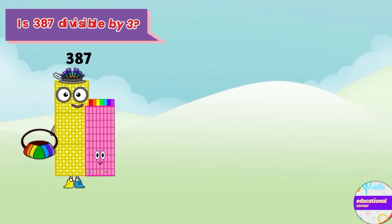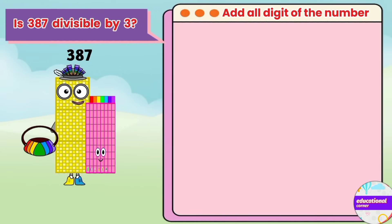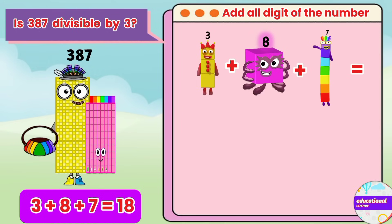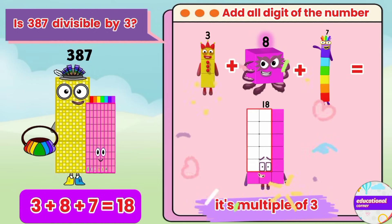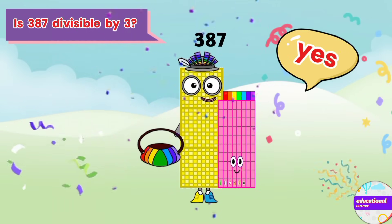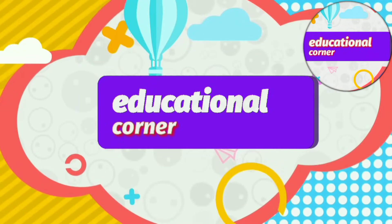Is 387 divisible by 3? Let's check. 3 plus 8 plus 7 equals 18. It's a multiple of 3. Yes! Hope you liked the video. Bye!